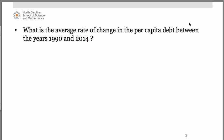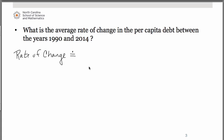Remember that average rate of change is a slope calculation. Since we're going to be estimating these values from our graph, to be mathematically correct we should use an approximately equal to symbol. It's going to be the change in y over change in x. In this case our y values are the debt, so let's refer to that as capital D for debt.